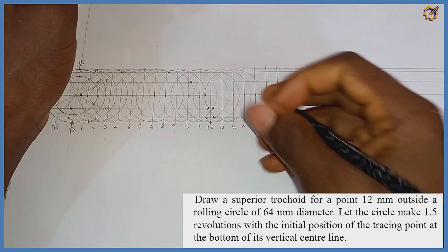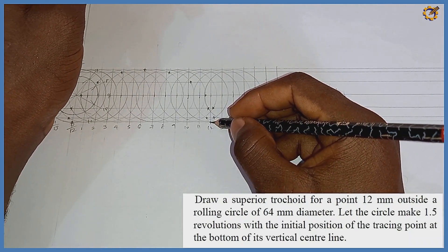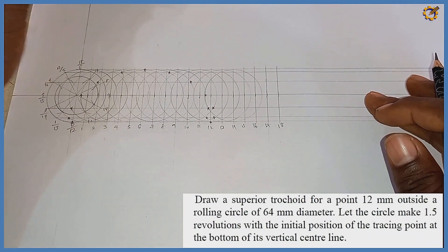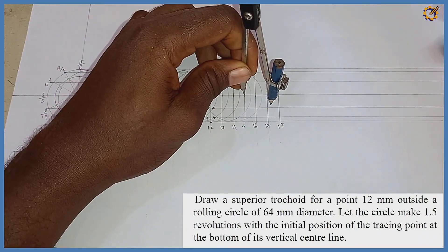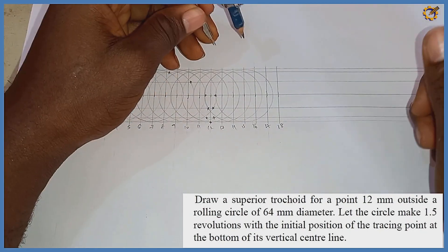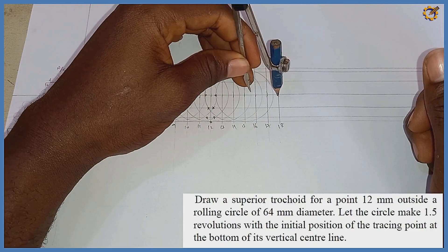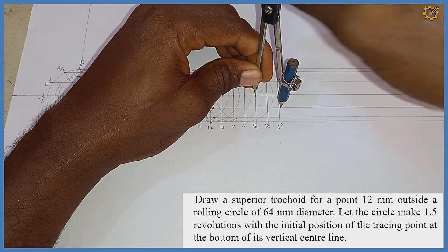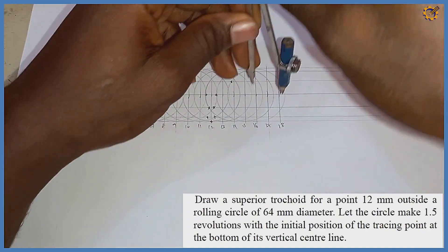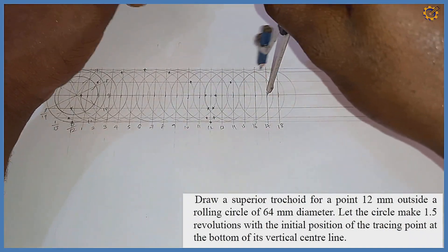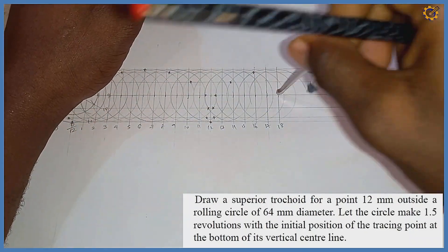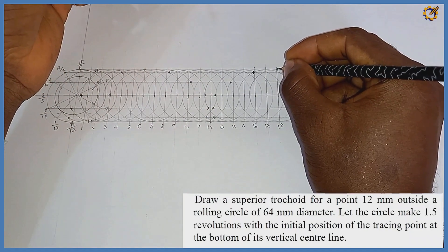If we were doing only a complete revolution we would stop at mark 12, but since this is 1.5 revolutions we continue to mark 18. For mark 15 I place my compass and draw the circle faintly, marking the intersection. Then mark 16 — drawing and marking the touch point. Then mark 17 — drawing and marking the intersection right there.